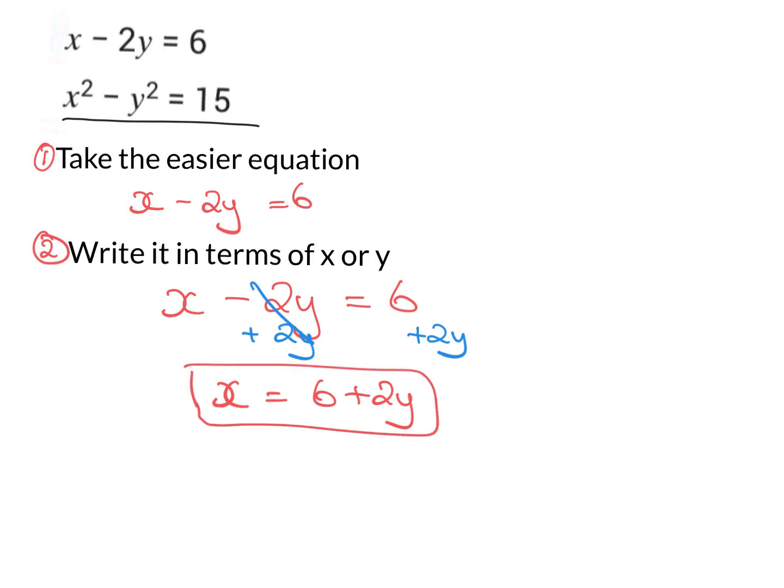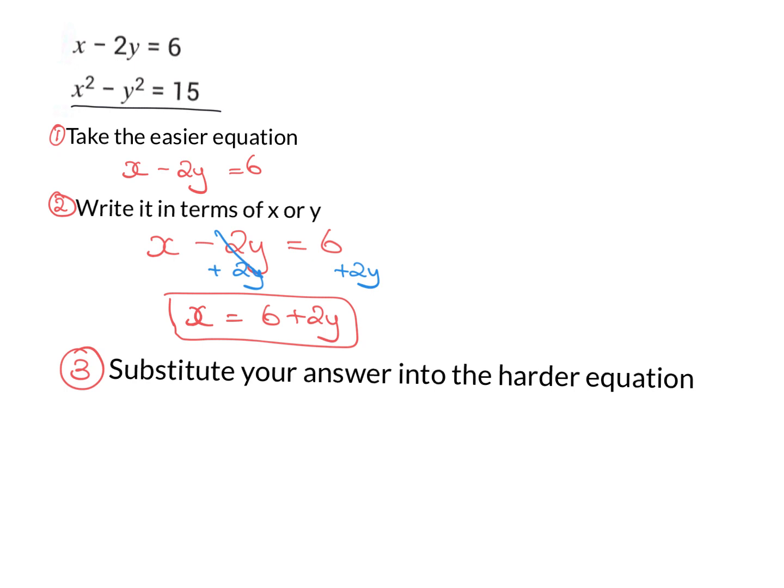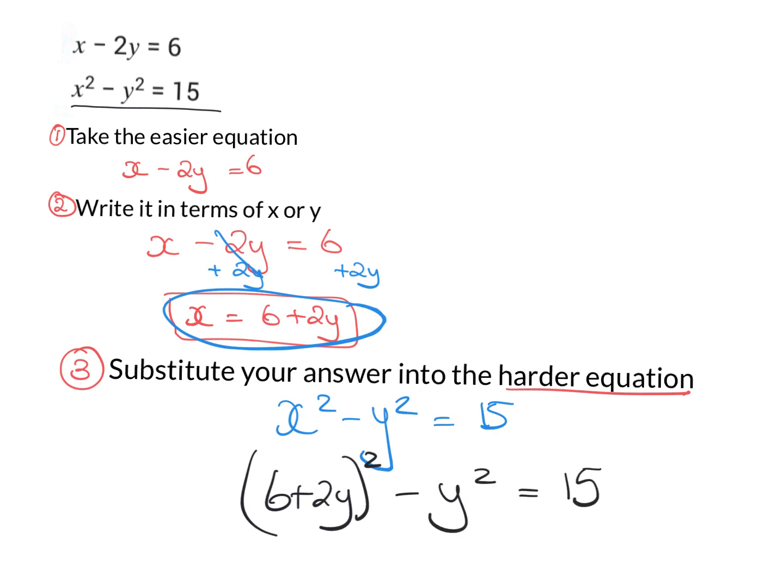Step three is substitute your answer into the harder equation or the non-linear one. If you have a look at this, obviously this one up here is the harder equation. It is x squared minus y squared equals 15. And I'm going to substitute this answer, so the answer I got in step two in. So I'm saying here that x is equal to 6 plus 2y. So it would be 6 plus 2y squared minus y squared equals 15.